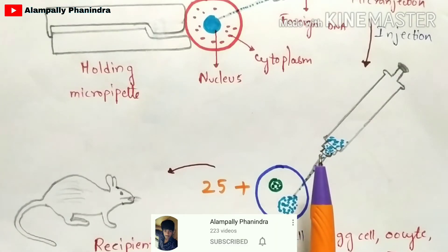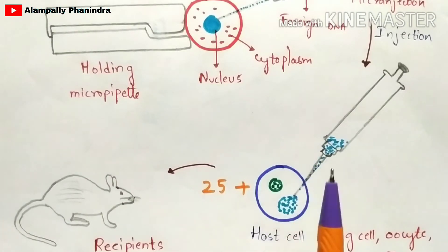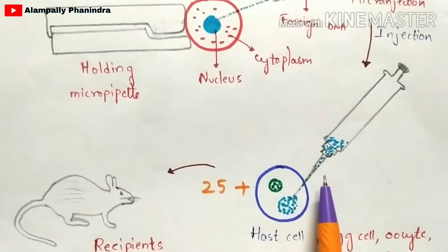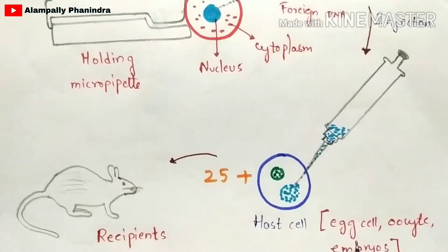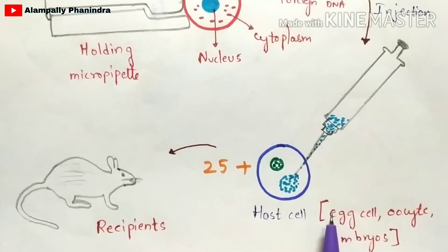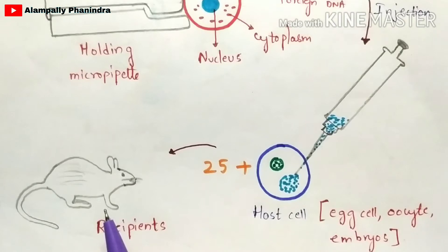The nucleus of the host cell contains genetic material in the form of DNA, and in some cases RNA which gets converted into DNA before entering the nucleus. The host cells used are egg cells, oocytes, or embryos. For example, if you take an egg cell, you inject the total foreign DNA into it and implant that egg cell into a recipient.